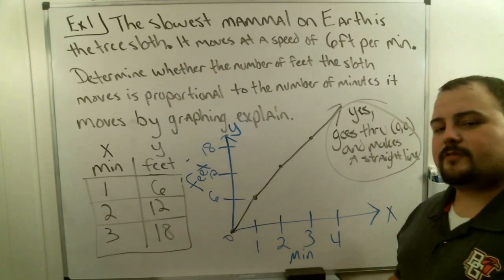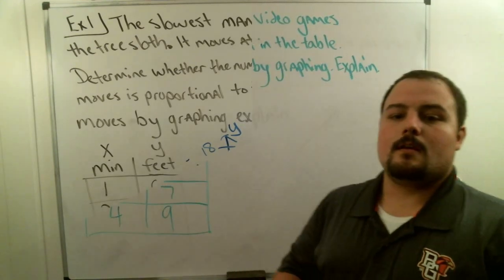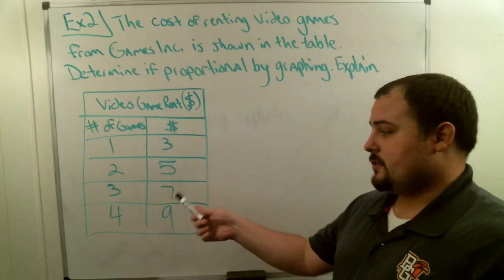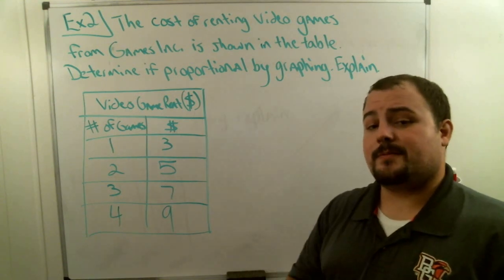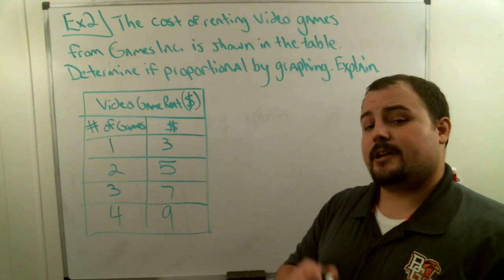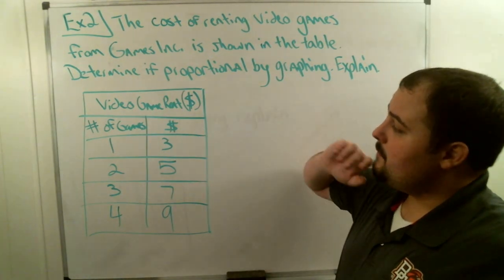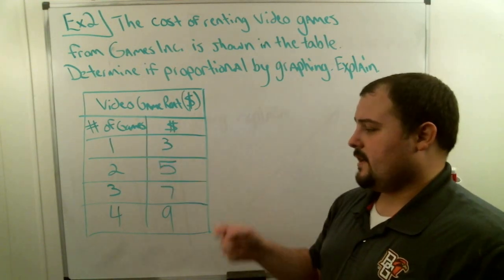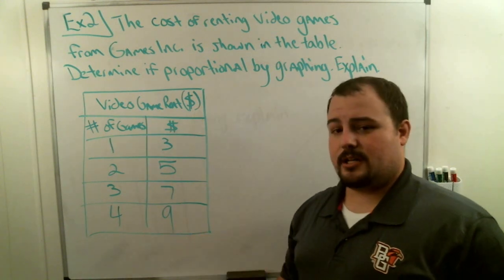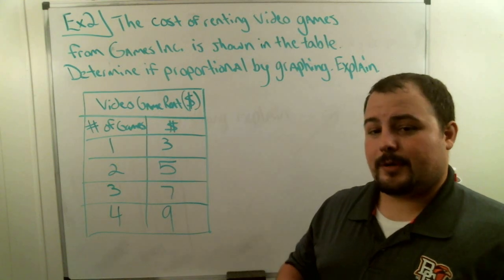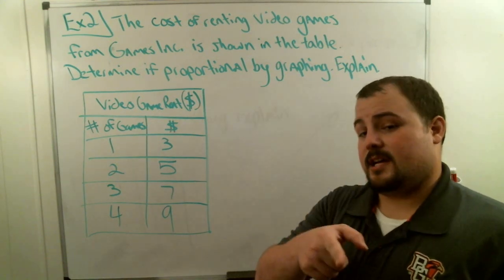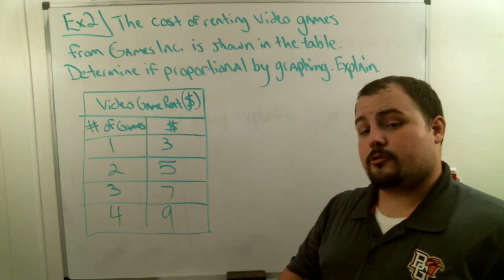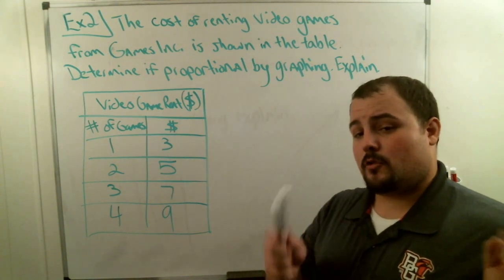Let's do another problem. In this example, we're going to talk about the cost of renting video games from Games Inc. The table shows: one game costs three dollars, two games cost five dollars, three games cost seven dollars, four games cost nine dollars. Our job is to graph this and determine whether or not a proportional relationship exists, and explain how we know. Remember, if it's proportional, it has to make a straight line and go through the origin.